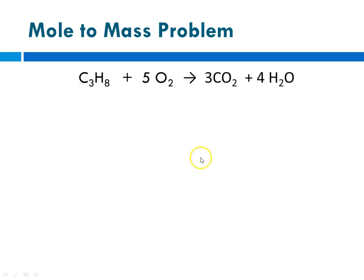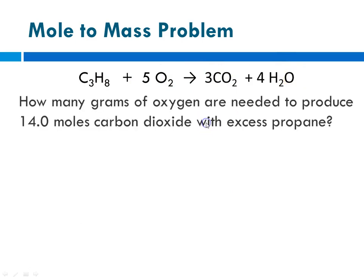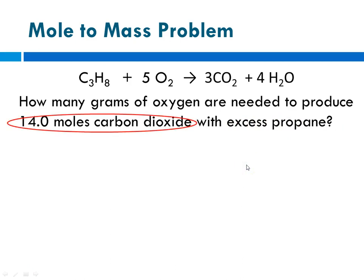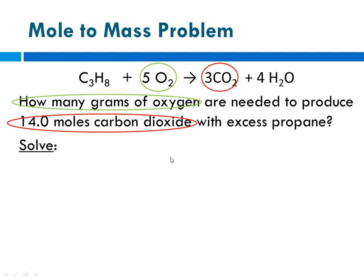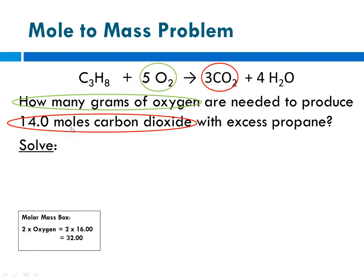Same reaction — propane plus oxygen yields carbon dioxide and water — only now the problem asks: how many grams of oxygen are needed to produce 14.0 moles of carbon dioxide with excess propane? Identify the given: carbon dioxide. The unknown: grams of oxygen. Circle them in your equation so you know what your mole ratio will be. We know we'll eventually need grams of oxygen, so I always like to begin by doing the molar mass calculation.